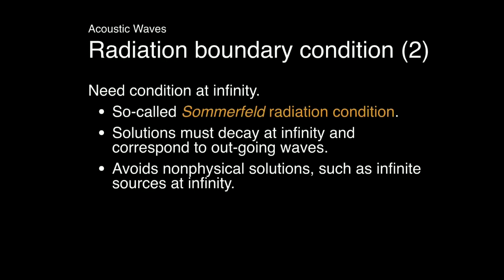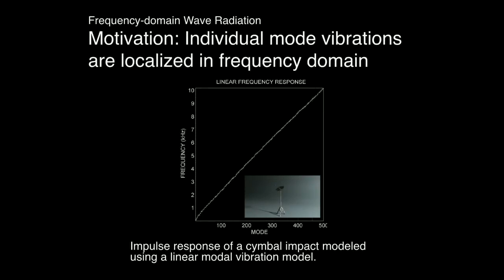For modal sound, individual modal oscillation frequencies are strongly localized at the modal frequency. If we take a histogram of the vibrations of each mode of a cymbal modeled with linear modal analysis, the frequency content of each mode is very localized around its modal frequency. This means we can model the radiation of individual modes using just the wave equation at that frequency, which is a good approximation to the mode amplitudes. Short-time transients aren't modeled, but it's a good approximation otherwise.